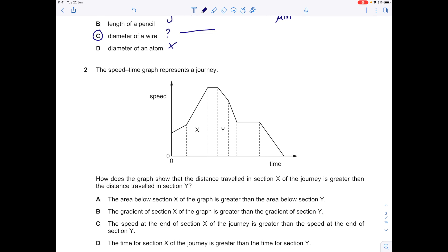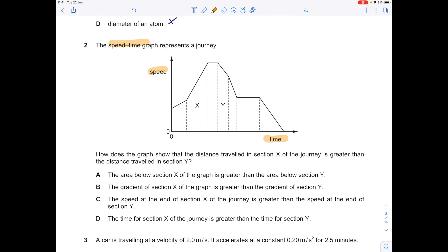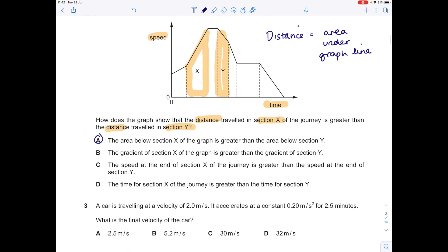The speed-time graph represents a journey. How does the graph show that the distance traveled in section X of the journey is greater than the distance traveled in section Y? We're comparing these portions of the graph. Remember, with a speed-time graph, distance is given by the area under the line. So let's look for an answer which demonstrates that. The area below section X of the graph is greater than the area below section Y. Yeah, that's exactly what I was hoping for, so the answer here is A.